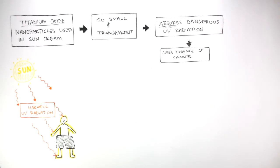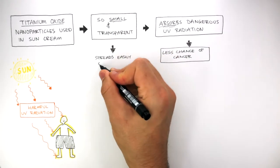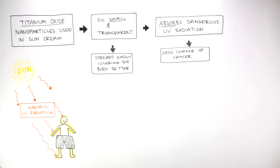The titanium oxide is so small and transparent that it spreads easily, covering the body better compared to larger particles. The consumer saves money as the sun cream spreads better, so they use less of it.